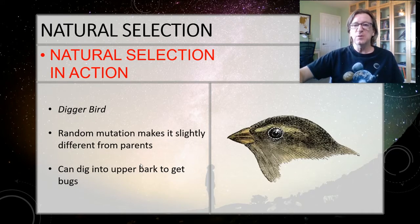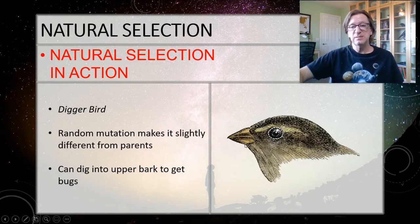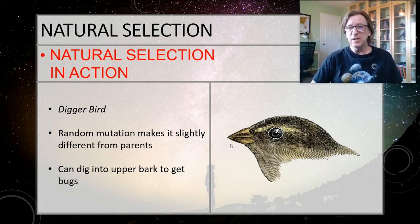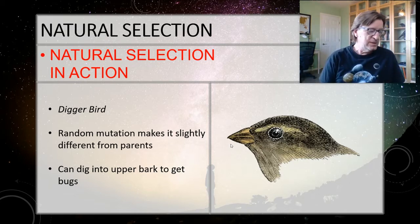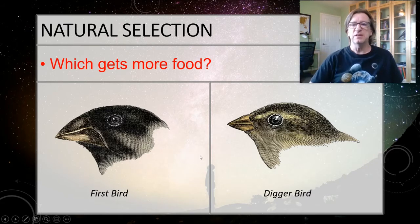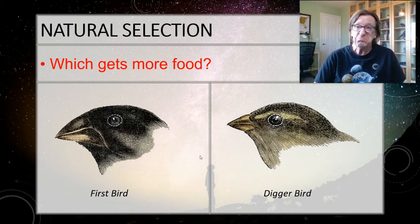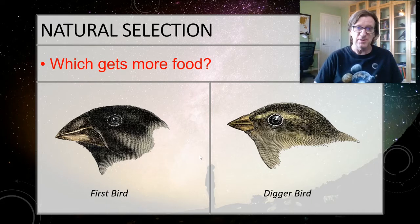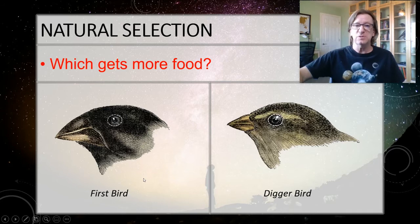Then along comes a random mutation — this new bird actually has a narrower beak than First Bird. It can't eat the seeds because its beak isn't strong enough. However, it can dig into the upper bark and get the big juicy bugs inside — very nutritious. So the question is: who's going to get more food? Those seeds are really hard to work at, but the big nutritious bugs are much easier for the digger bird to access. Who's going to get a total of more nutrients? Pause the video and think about it before you move on.